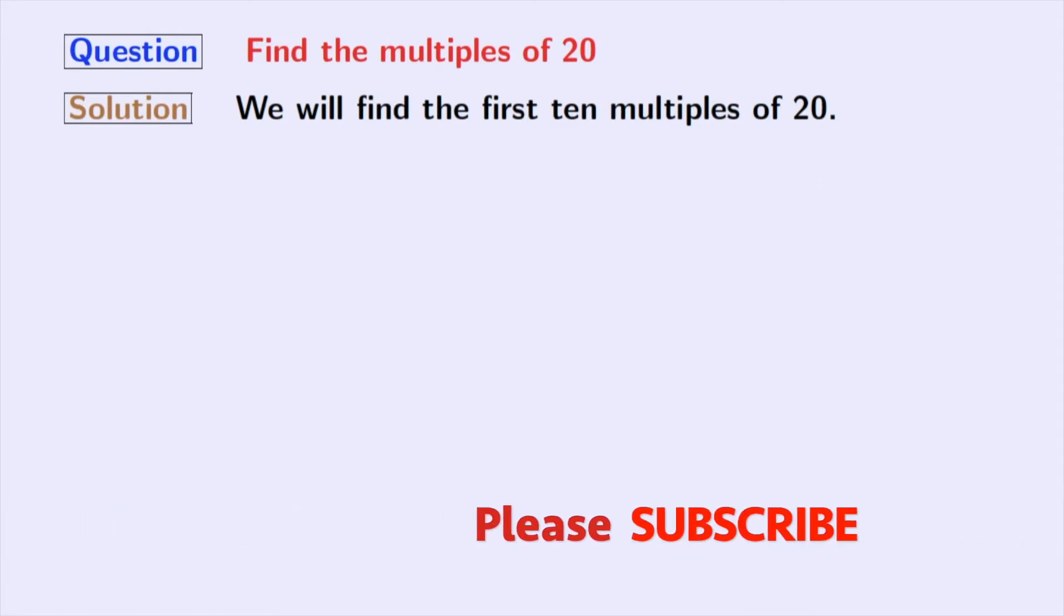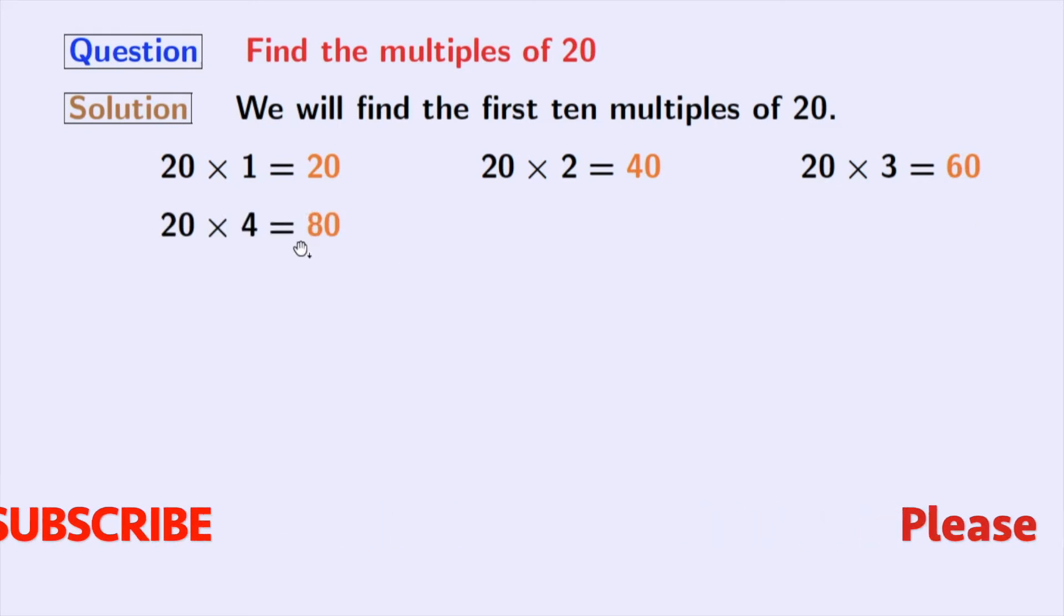We will start with 1. If we multiply 20 with 1, we get 20. Multiplication of 20 and 2 gives us 40. Multiplication of 20 and 3 gives us 60. If we multiply 20 with 4, we get 80.